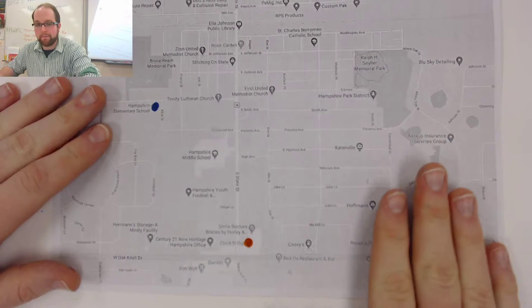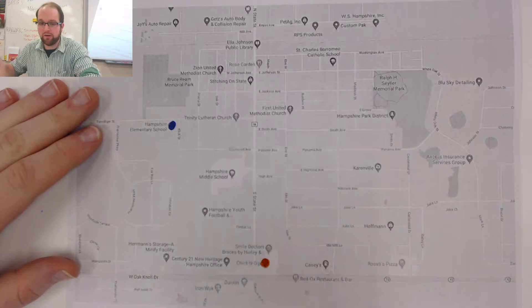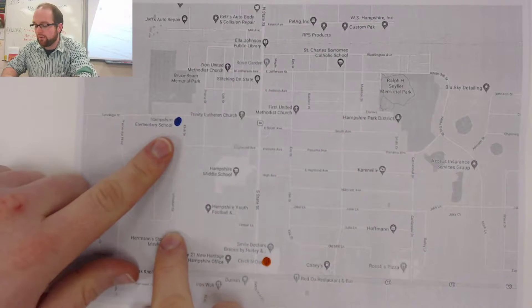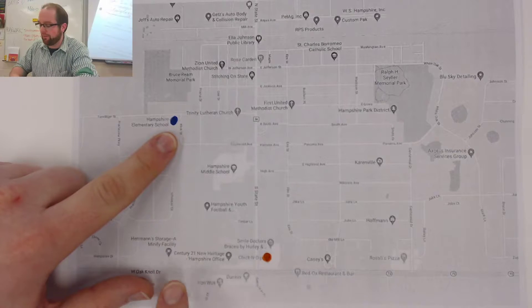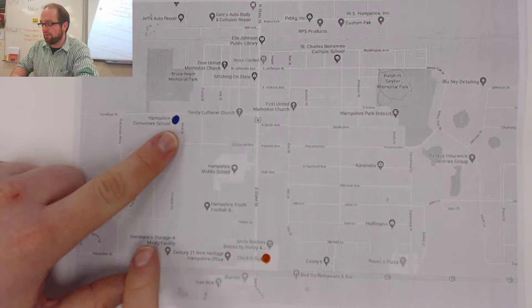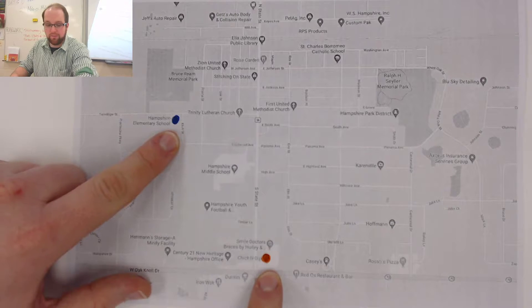So I like to consider this an analogy of looking at a map. So this is a map of Hampshire and it's a little small, but we have over here Hampshire elementary school. Let's say I was going to go hang out over there and hang out with some of the elementary school teachers and we wanted to go get something to eat. So we go down to chicken dip down here.